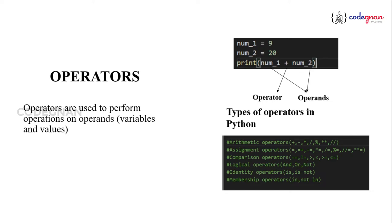Let us start with identity, because this part plays a very key role. Every person has a unique identity — even twins have different fingerprints and face IDs. That is the logic of identity operators: they compare the memory locations of two objects, because everything is an object in Python.